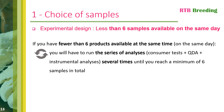The second possible case is when you have fewer than six samples available at the same time for analysis. If this is the case, you will have to carry out the various analyses — the consumer test, the QDA analysis and the instrumental analysis — several times until you reach a minimum of six samples analyzed in total.